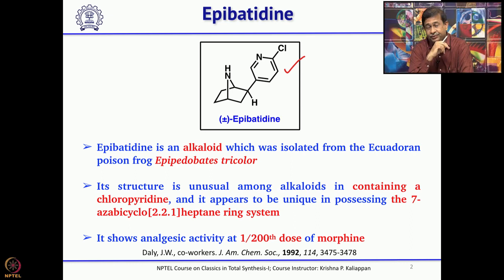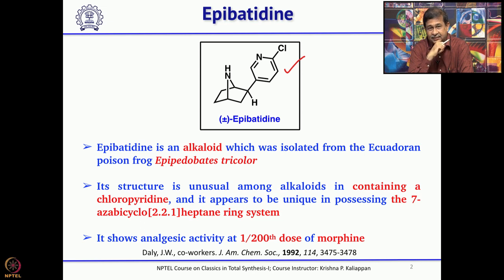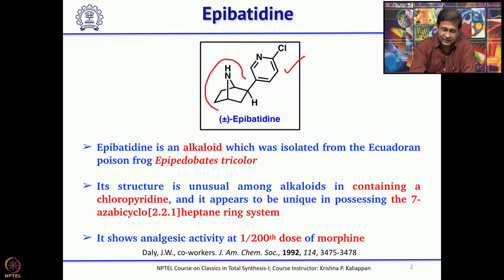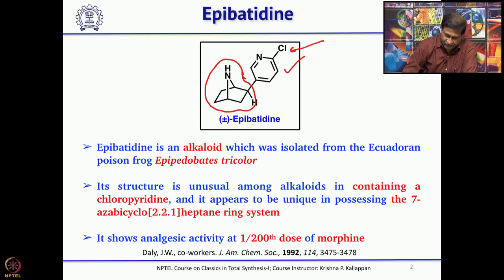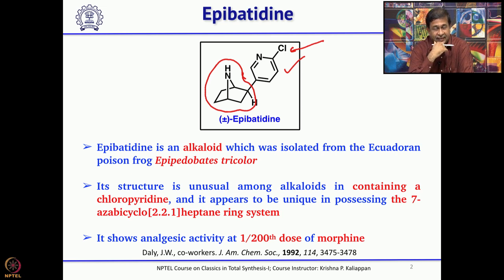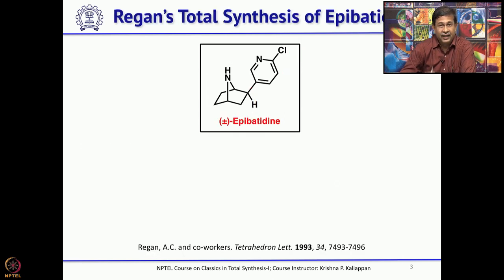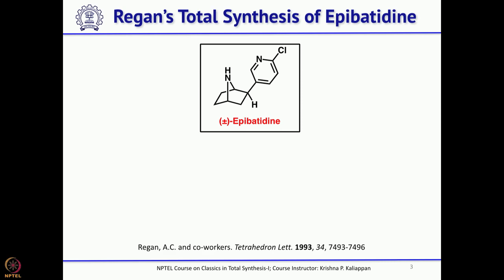From a synthetic point of view, when you look at this molecule, it has a 7-aza-bicyclo[2.2.1]heptane system with a chloropyridine attached at the bridgehead. Because of its remarkable biological activity, people became interested in total synthesis of this natural product. In this lecture, we will talk about three different strategies to synthesize this molecule.